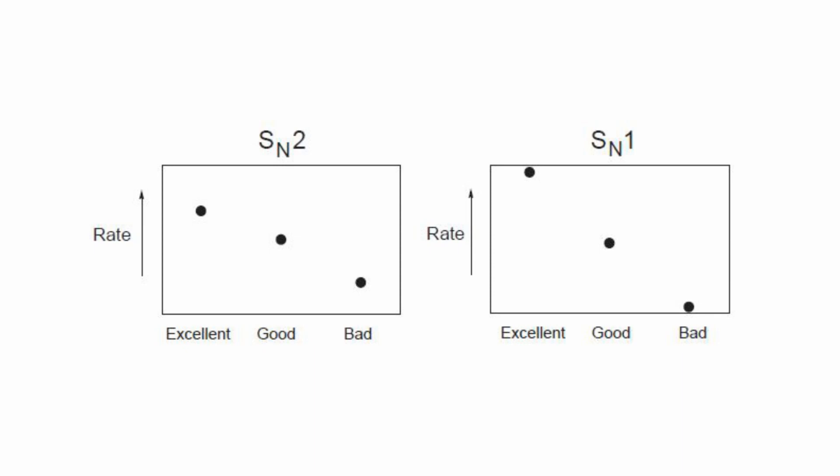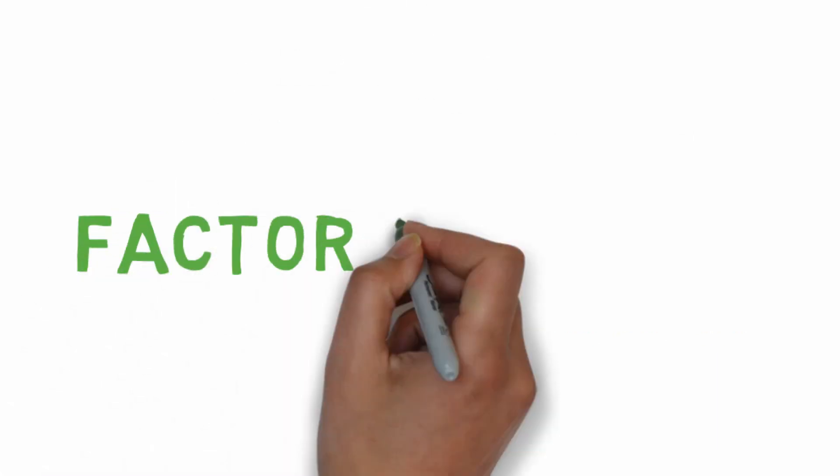But as SN1 needs more stability of the leaving group, because if you think, you will see the formation of the carbocation is the key moment in SN1 reaction. So the more stable the leaving group will be, it can leave and form the carbocation easily. But from this factor alone, we cannot decide if a reaction will go by SN2 or SN1.